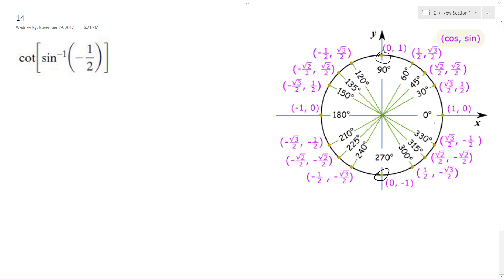So negative one-half, or sine, works out nice because we got the numbers here. The y over r is actually equal to negative pi over six.